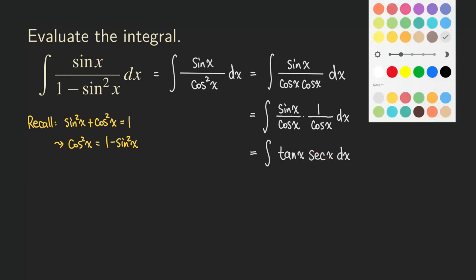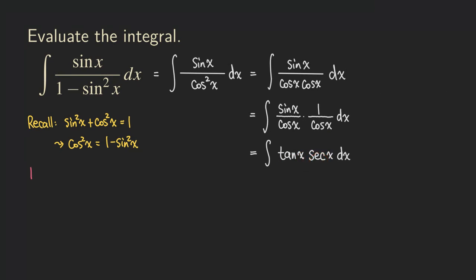Let's just recall something else. We know that the derivative of secant x is equal to secant x tangent x. And so now the question is, what is the antiderivative of tangent x secant x? That will be secant x.